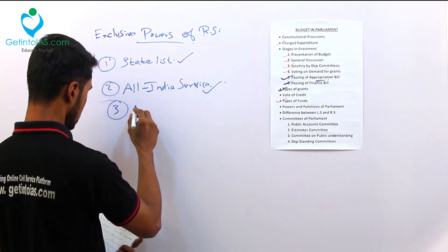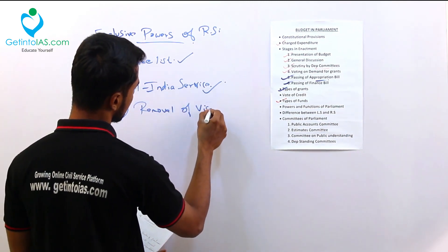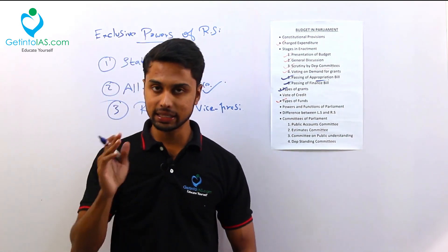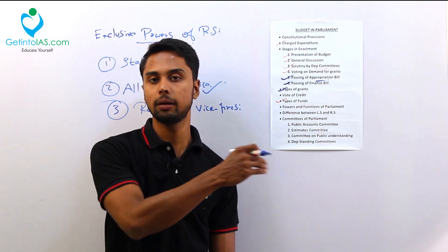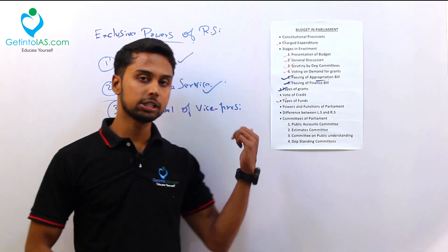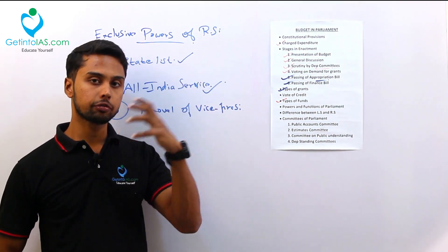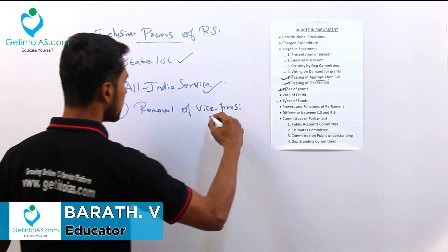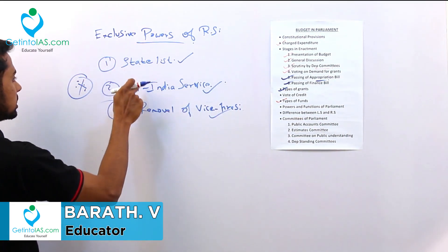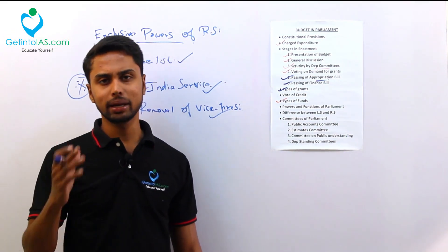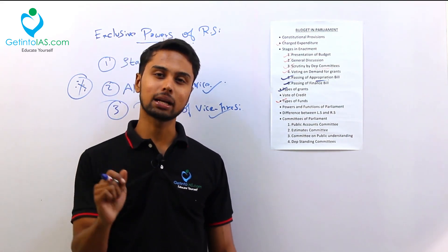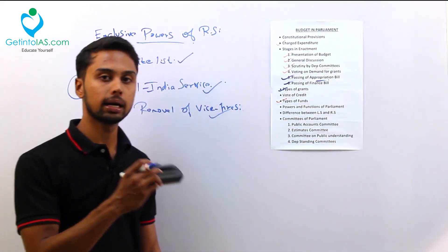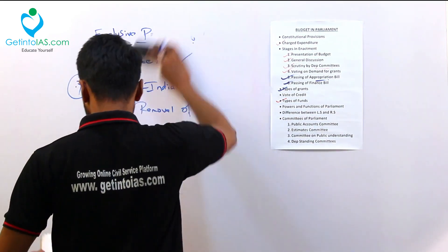Next is the removal of the Vice President. The Vice President of India is the Chairman of Rajya Sabha. When you want to remove the Vice President, a resolution can be initiated only in Rajya Sabha. So these are the three important exclusive powers of Rajya Sabha — State List legislation, All India Services, and removal of the Vice President. Rajya Sabha may not be as powerful in many areas, but it cannot be subordinated entirely under Lok Sabha — it has its own exclusive powers.